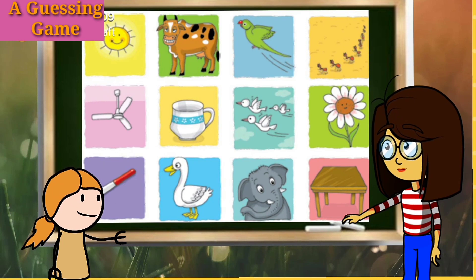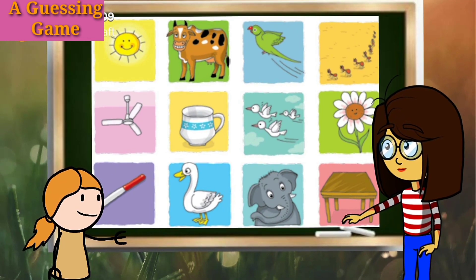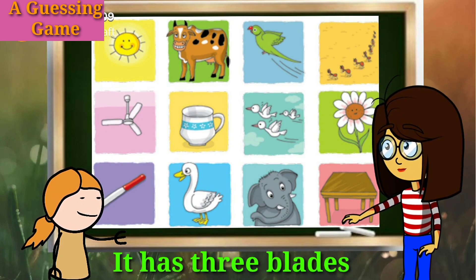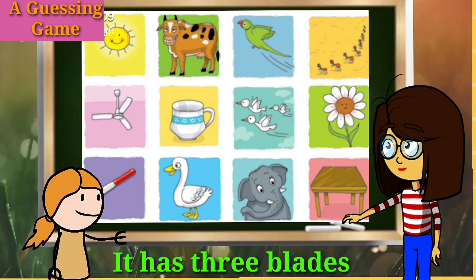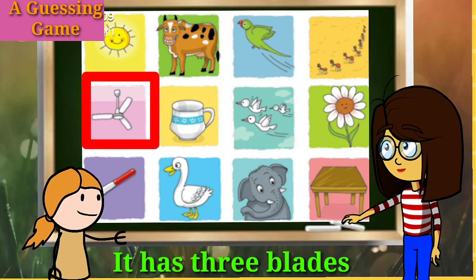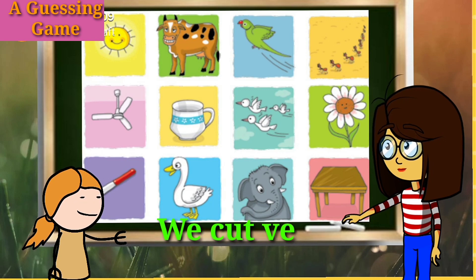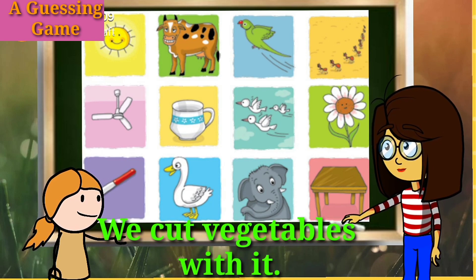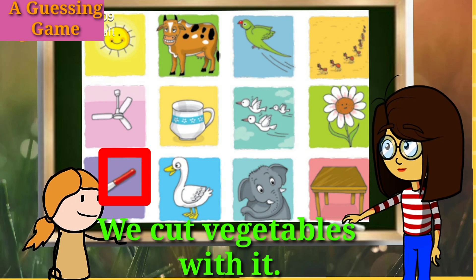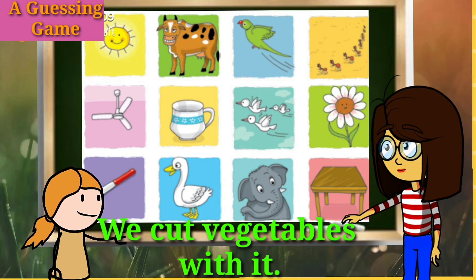Very good! The last puzzle — it has three blades. It is a fan. Very good! We cut vegetables with it. Teacher, my mother cuts vegetables with a knife. The answer is knife. Very good, Nita, keep it up!